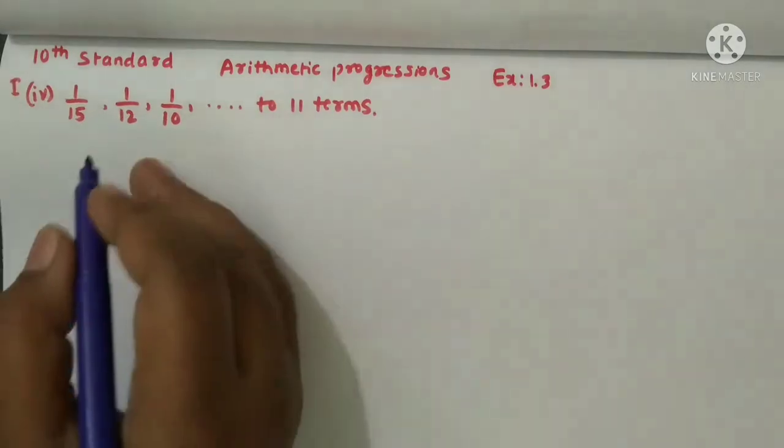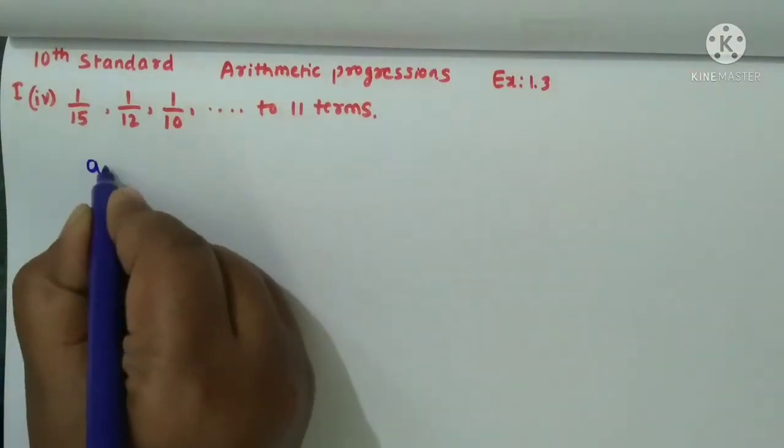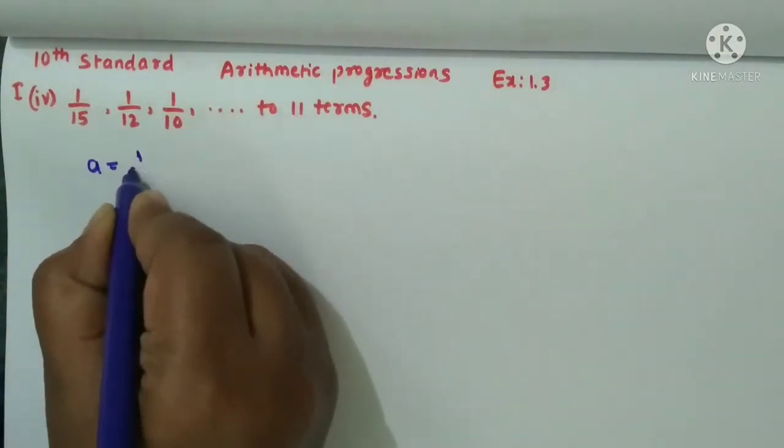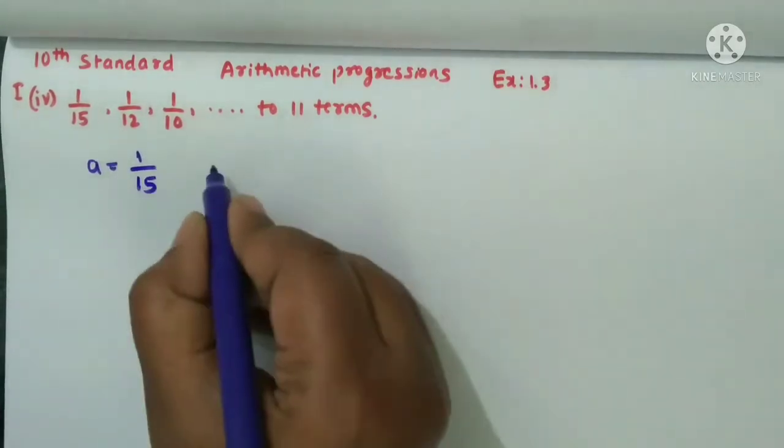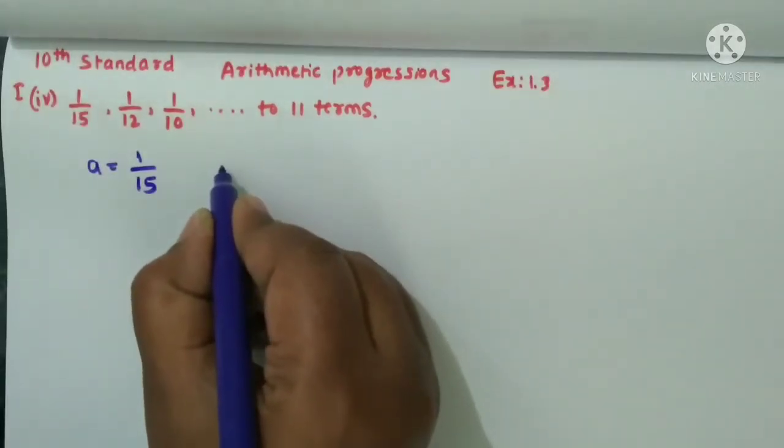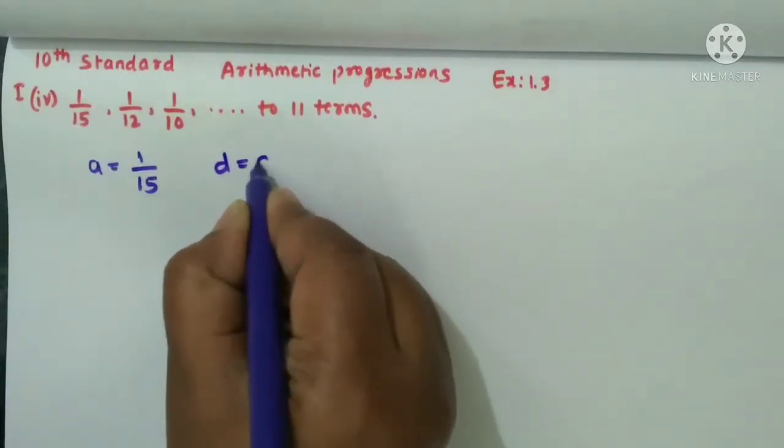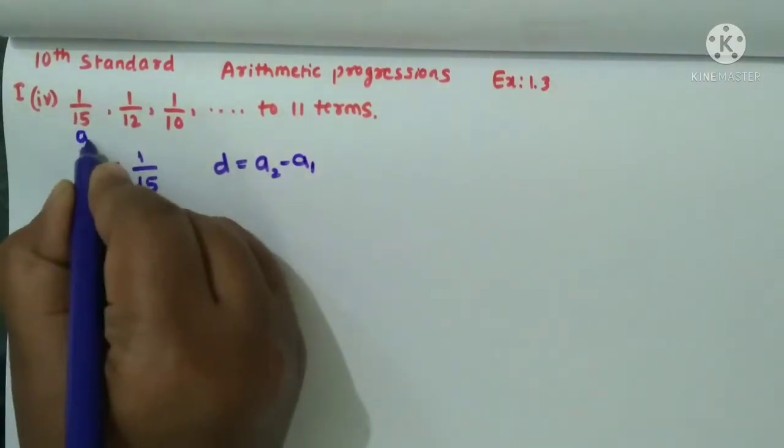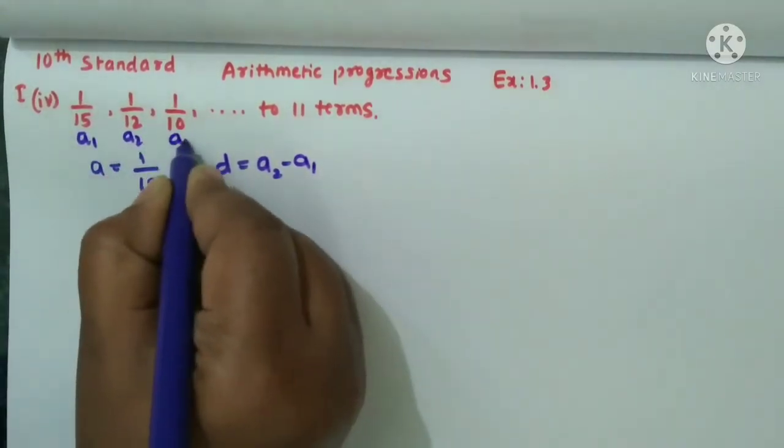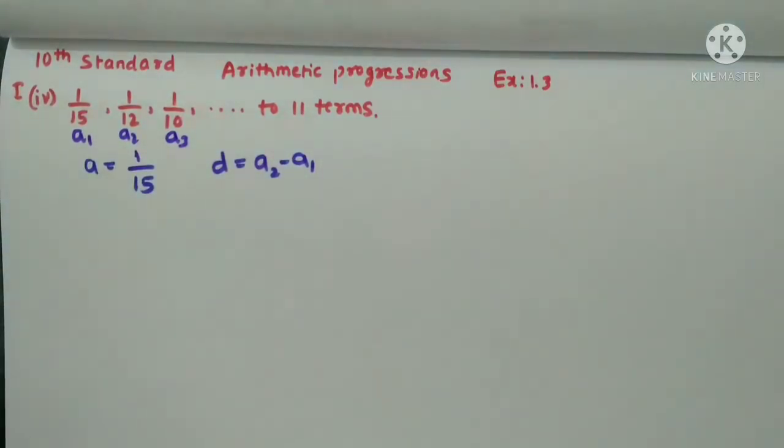So first we have to find, write the a value here. A value is first term, so 1 by 15 is a here. Then how we are going to find the d value? Always we know that d value is a2 minus a1. This is a1, this is a2, a3. We have to find the sum of the 11 terms, they are only given n value as 11 here.